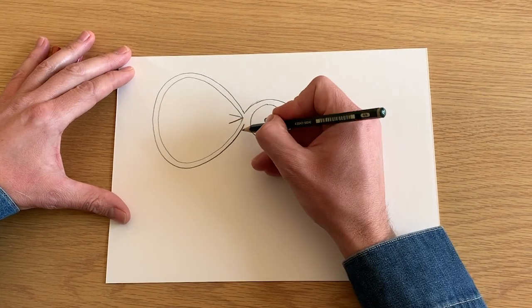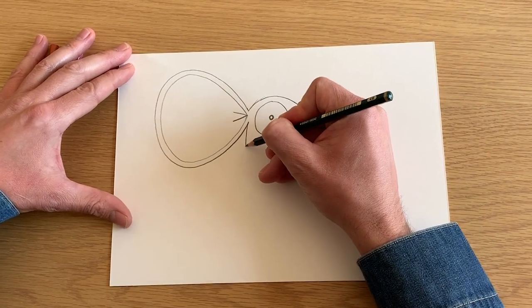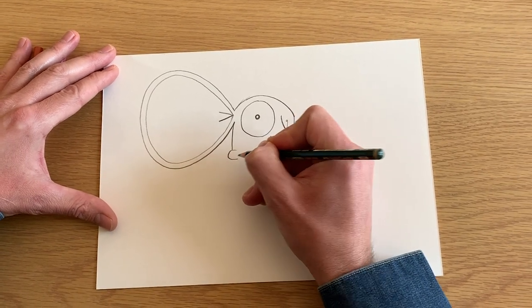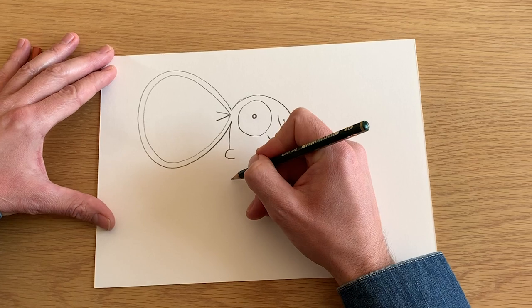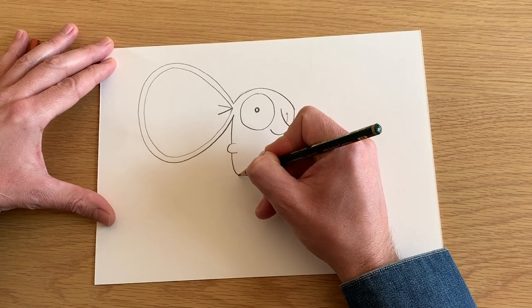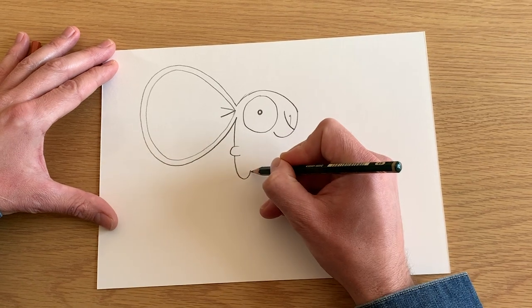Okay, then from the ear you're going to do a line down and draw in the arm for the little mouse, which is like a C shape here. And then you follow this line down and create a little leg.